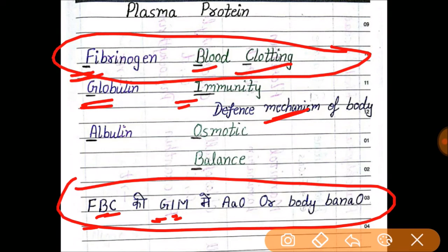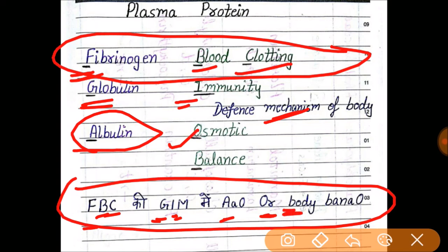And A is for albumin, and its function is O for osmotic, B for balance — so osmotic balance. This is the trick you can follow to remember the functions of different components of blood.